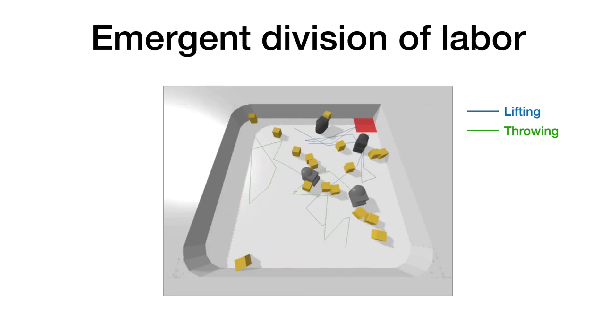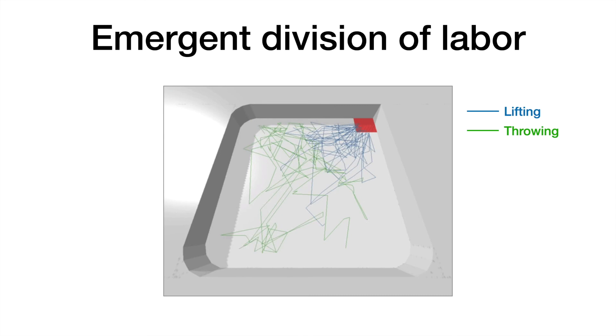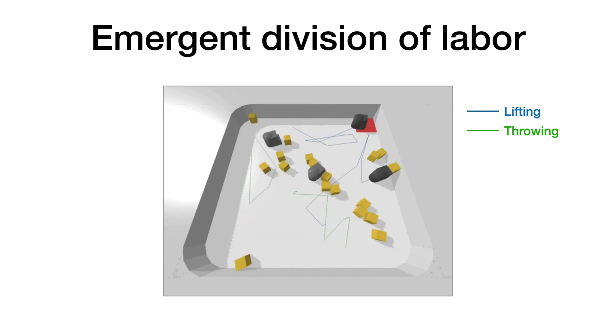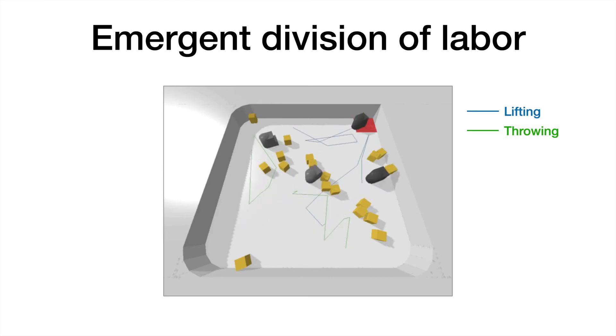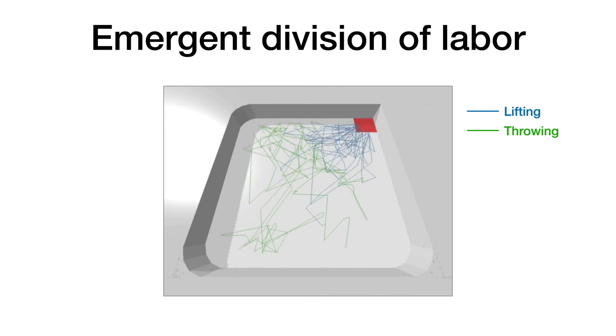To see this division of labor more clearly, we can again visualize the movement trajectories. We see that the green trajectories for the throwing robots cover the bottom left half, which is where far away objects are. On the other hand, the blue trajectories for the lifting robots cover the top right half near the receptacle. This illustrates a synergistic division of labor, where each robot has learned how to best use its own unique capability to help the team succeed.